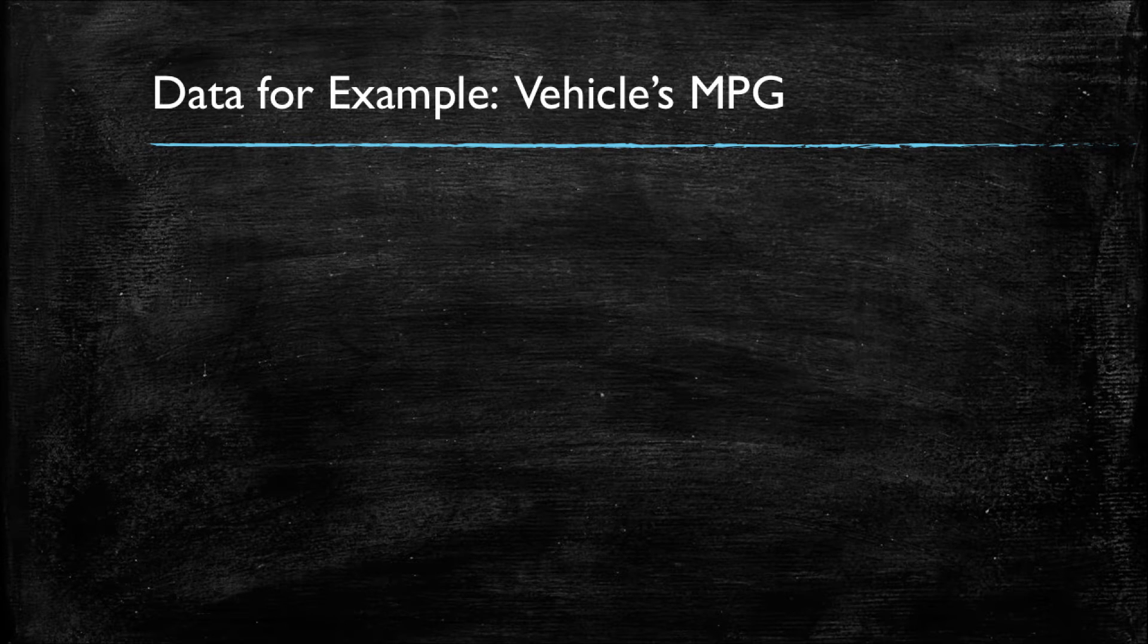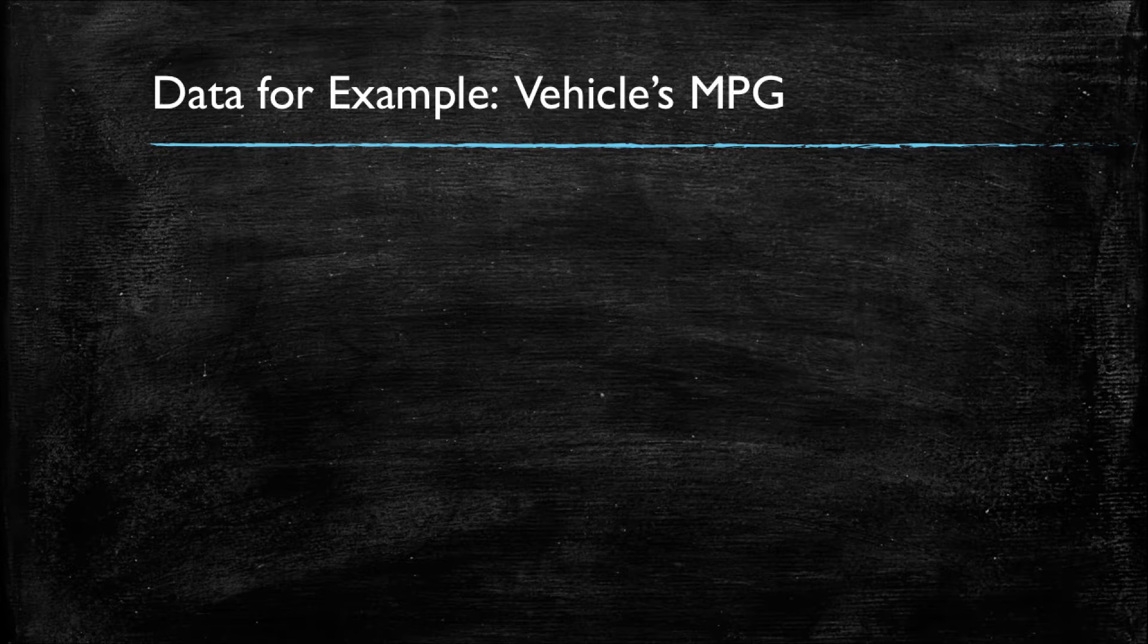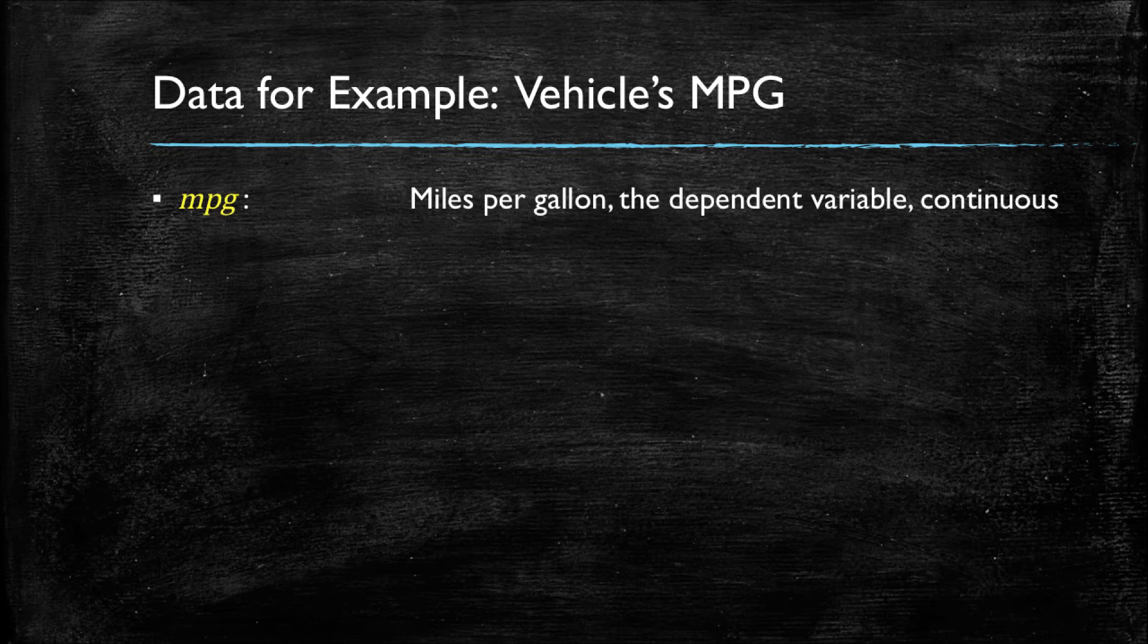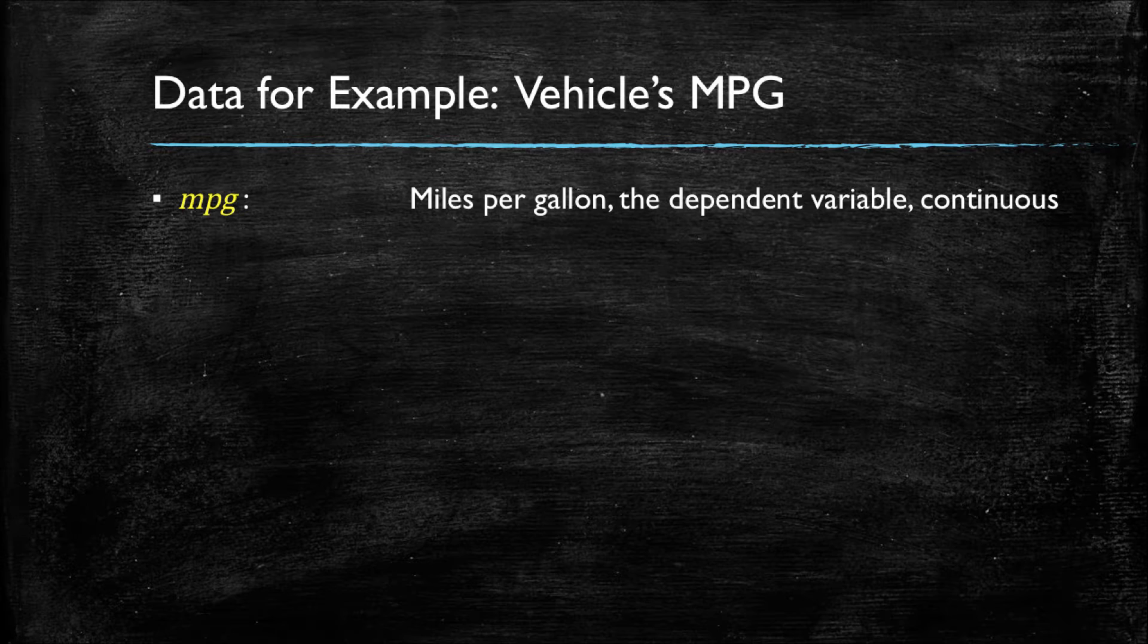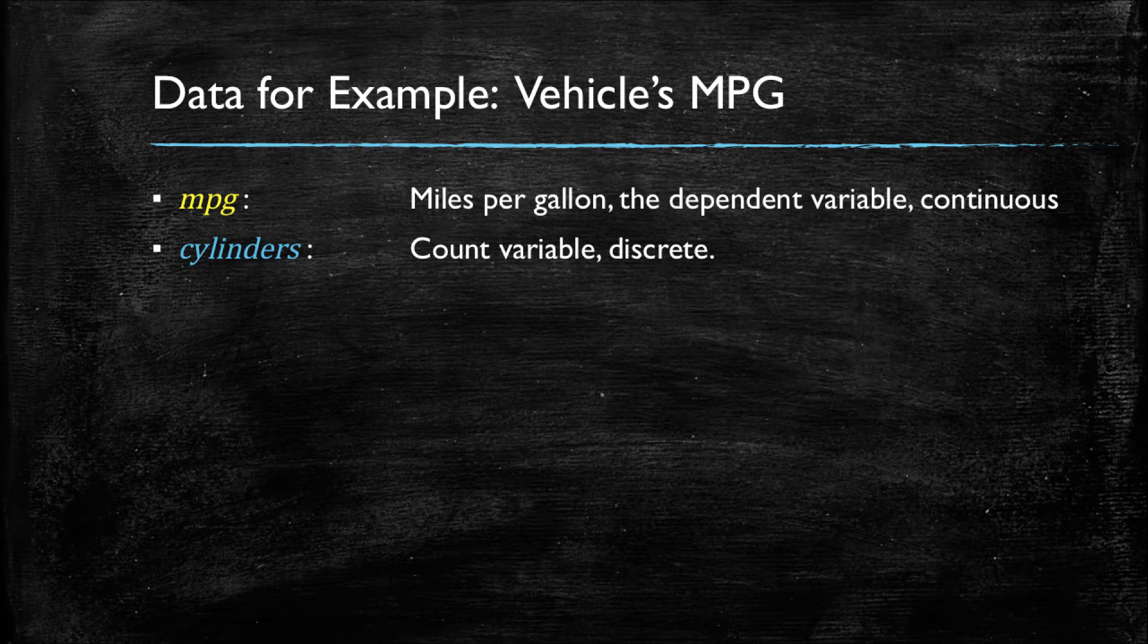Let's now describe the data we will use for the example. The data is usually available in a CSV file called auto.csv and it has data on vehicles miles per gallon. In fact, the miles per gallon, or MPG, is going to be the continuous dependent variable in all our models. We then have a series of variables that could explain a car's performance. In particular, the number of cylinders, which is a discrete variable.